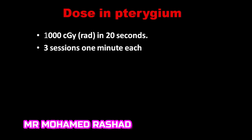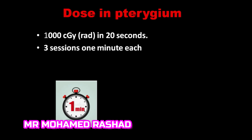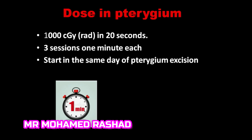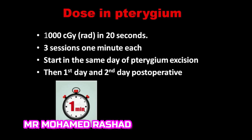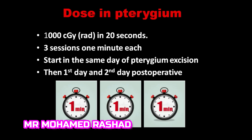The dose after pterygium excision is three sessions of one minute each, giving us around 5,000 to 6,000 rads in total. It is better to start on the day of pterygium excision, as previous studies show that starting early helps reduce the rate of recurrence. Another session is done on the first post-operative day, and then another on the second post-operative day.